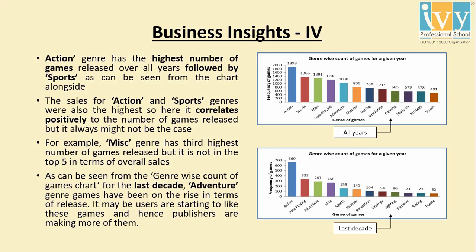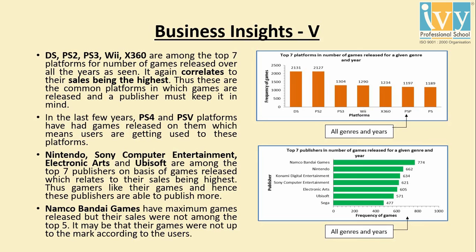It can be seen that adventure genre games have been on the rise in terms of release in the last decade. It may be that users are starting to like these games and hence publishers are making more of them. Platforms with the highest release of games also had the highest sales, so these are the common platforms for release and a publisher must keep that in mind. For few of the top seven publishers, the sales are the highest, indicating that gamers like their games and hence these publishers publish more.